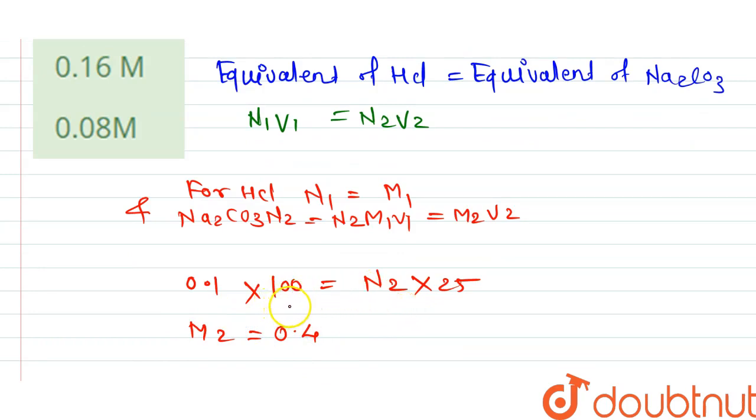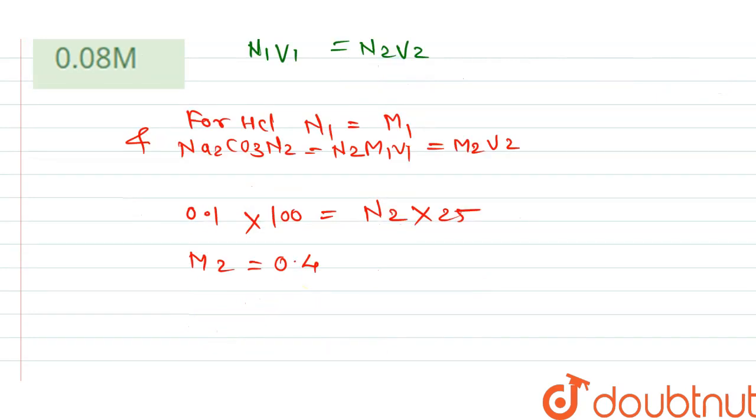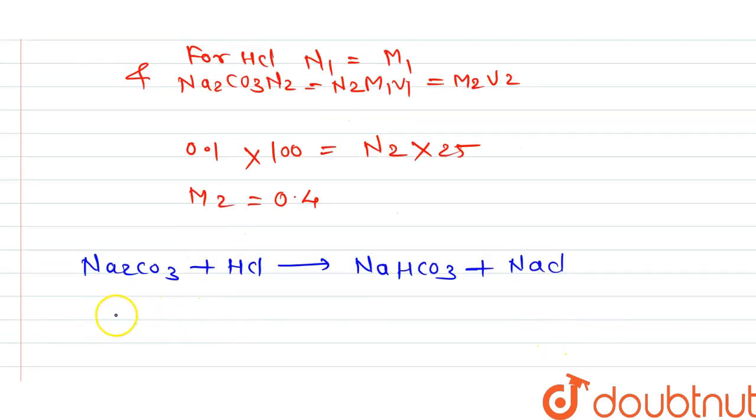So let's check the reaction. Na2CO3 plus HCl. When Na2CO3 reacts with HCl then it gives NaHCO3 and NaCl. So in moles, in moles of Na2CO3 sodium carbonate, that is M into V.